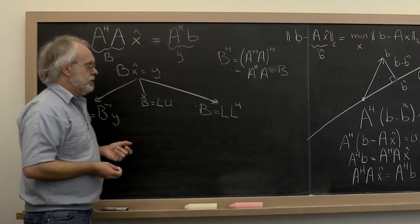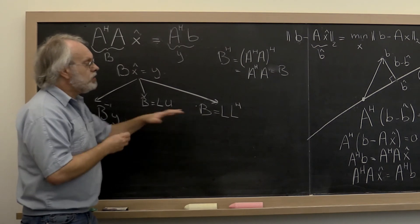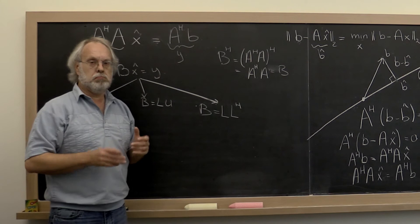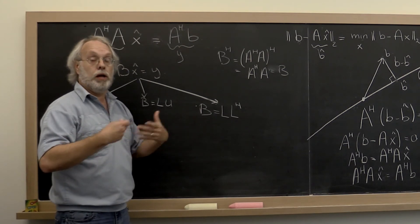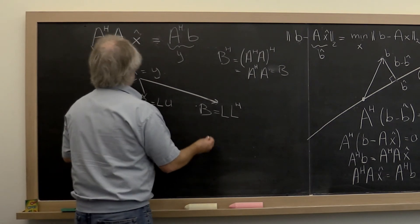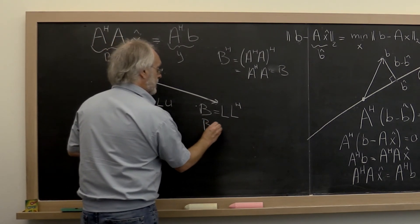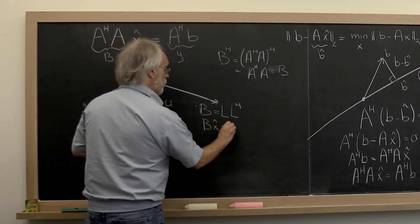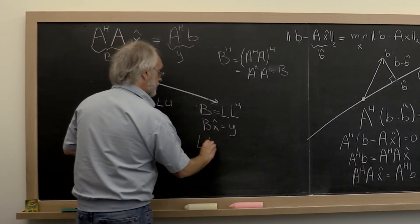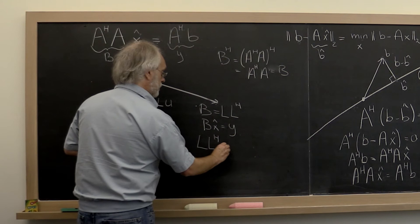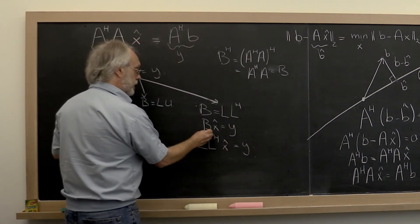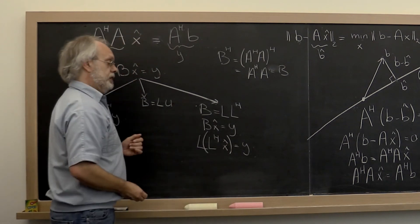And how does that help us? Well, we're going to see how to compute that in a future week. But let's just say that we know how to do this. What do we do with the result? Well, we want to solve B times X hat is equal to Y. We can then substitute in for B L times L Hermitian transpose. And then we can place some convenient parentheses.